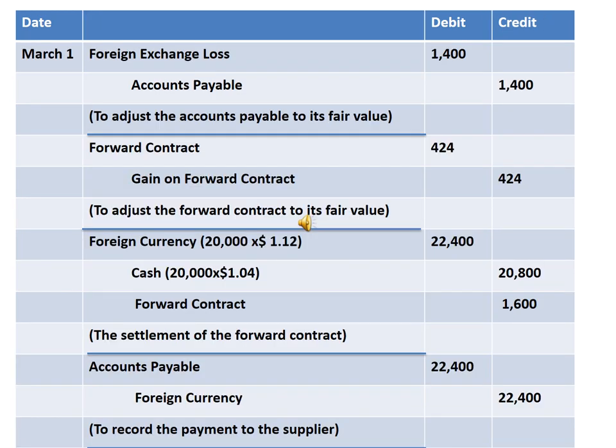On March 1st, which is the maturity date, we will record the loss from accounts payable and the gain from the forward contract. Finally, we will record the settlement of the forward contract by receiving foreign currency at the spot rate and making the payment at the forward rate, and settlement of the forward contract. Finally, we will pay the accounts payable.